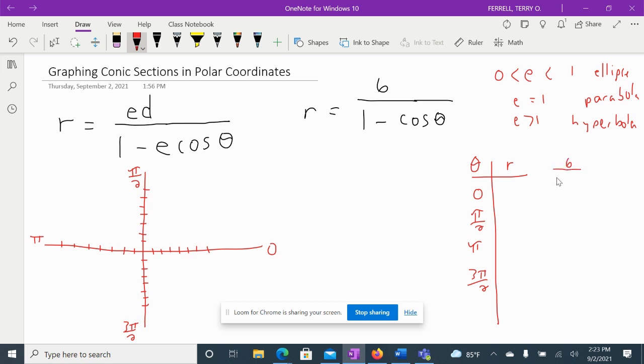It's going to be 6 over 1 minus cosine of 0. Well, now we've got to remember, what is cosine of 0? Well, if you don't remember that, you just need your unit circle. In your unit circle, I know this order pair. Now we're back to rectangular coordinates. This is always 1, 0. This is 0, 1. This is negative 1, 0. And this is 0, negative 1. Just the ordered pair. So cosine of 0, remember cosine is the x value, sine is the y. So my cosine of 0 is going to be 1.